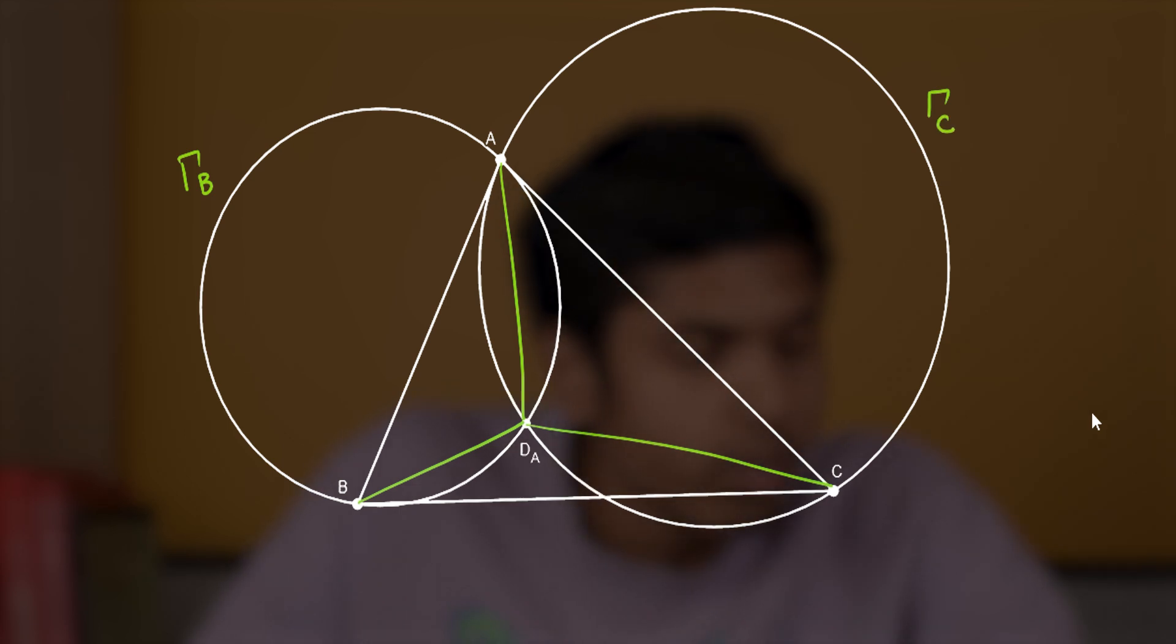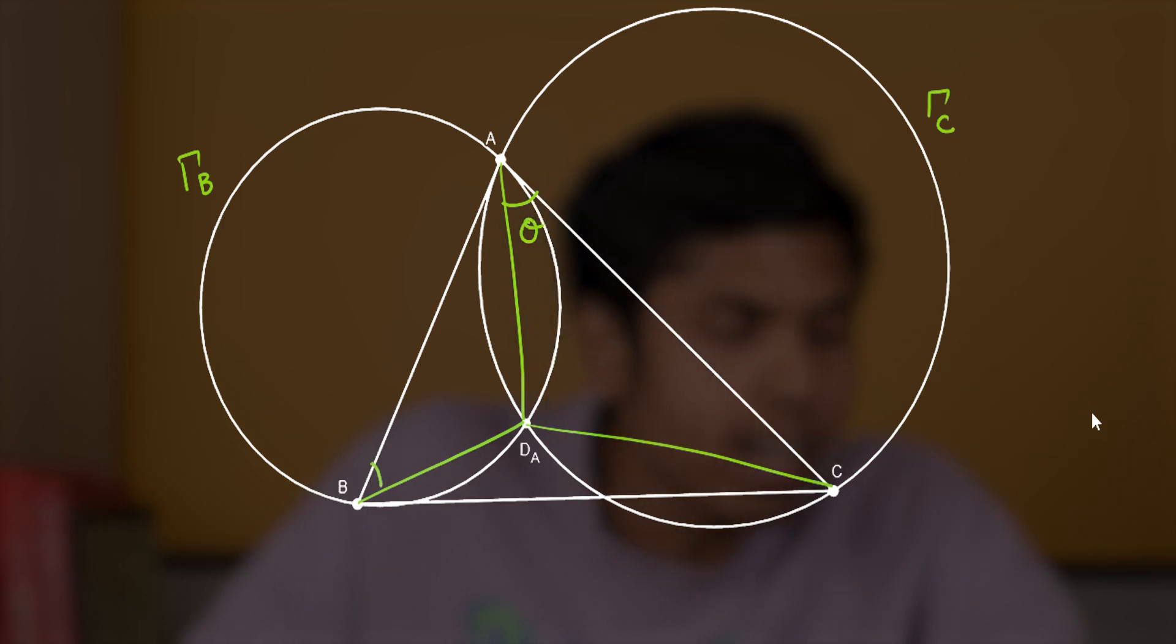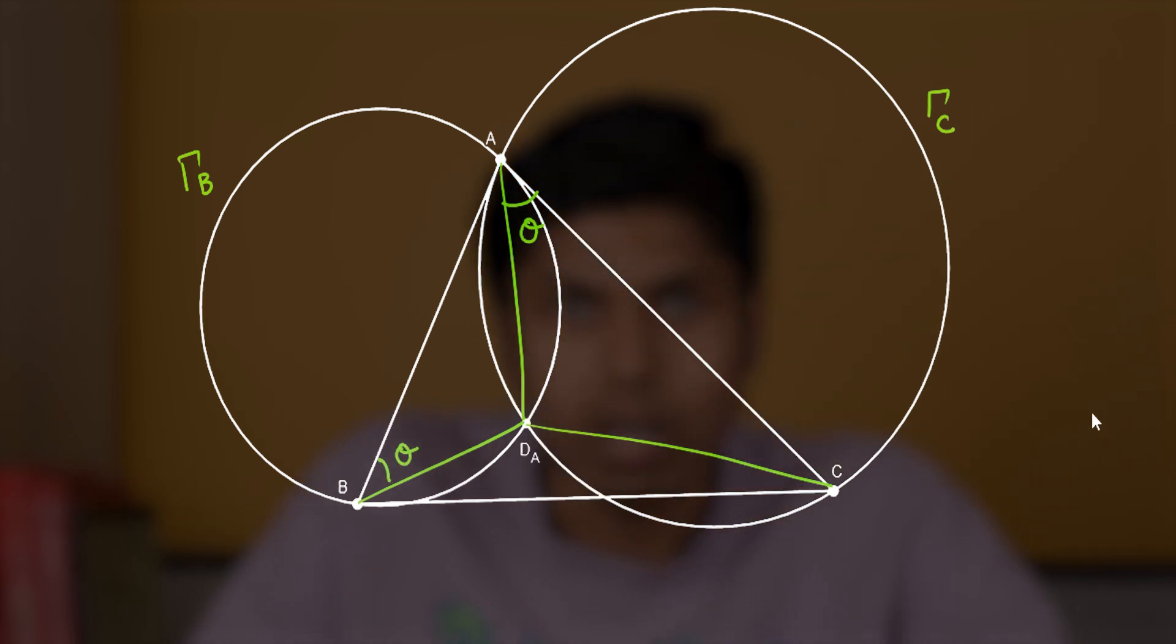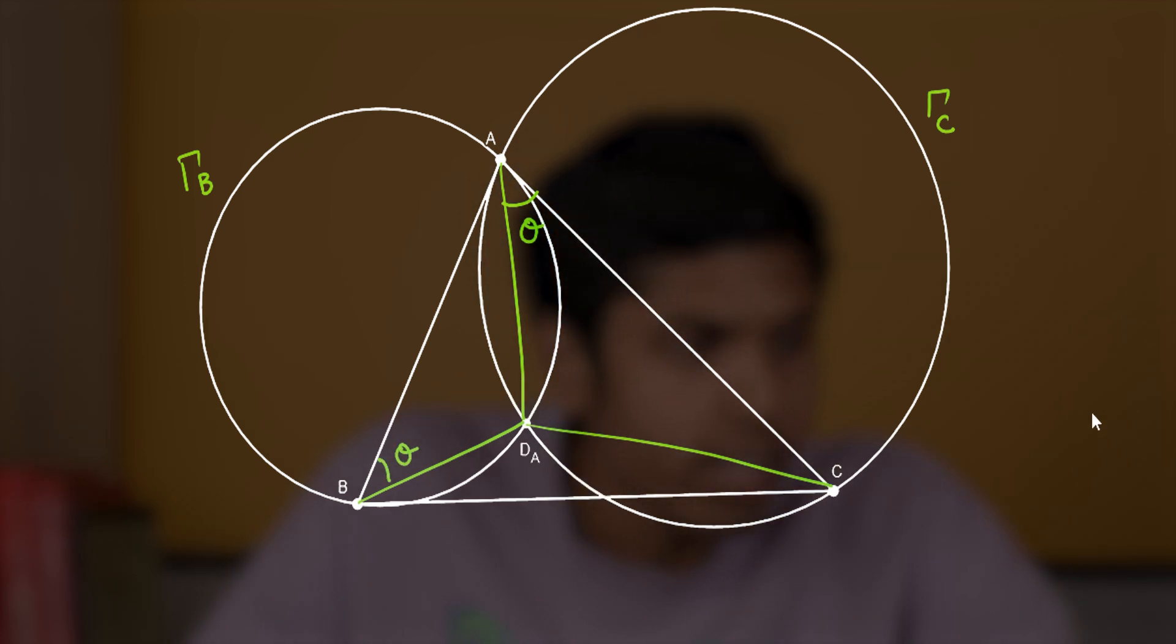We know that AC is tangent to gamma-B—so the left one is gamma-B and the right one is gamma-C. We know that AC is tangent to gamma-B at A, therefore the angle made by AC with AD_A, say theta, will also be the angle subtended by AD_A at the circumference of gamma-B, so angle ABD_A is also theta.